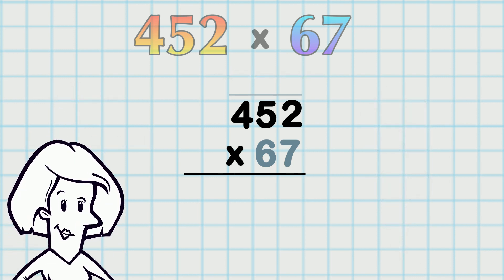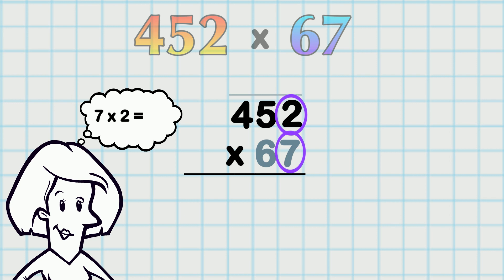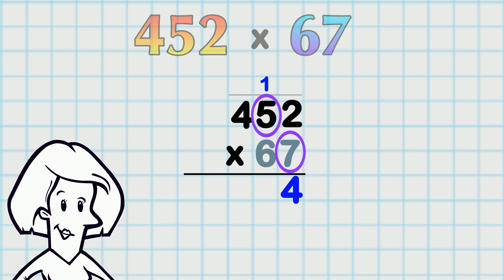Let's go! First we say 7 × 2, that's 14! The 1s part goes here, and the 10s part goes up above the line, directly above the next figure we are about to multiply.